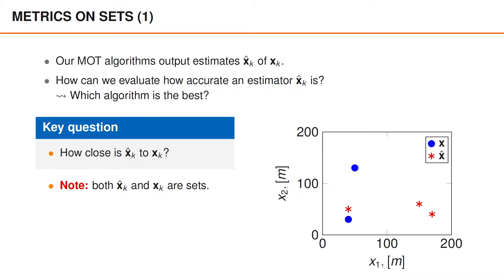For instance, in the figure to the right, we have a set of two objects represented by the blue circles. And our estimator tells us that there are three objects, as indicated by the three red stars. Our task is to figure out how close the set of red stars is to the set of blue circles. As you can understand, it is a bit more involved to measure distances between sets than between vectors, since sets are invariant to order and since the number of elements in the sets may vary.